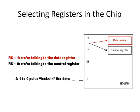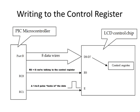When talking to this chip, you pull the RS pin high or low depending on which register you want, send a character or command to the eight data wires D0 through D7, and then pulse the E pin high and then low. After every time you talk to this chip, you have to delay about 100 milliseconds before talking to it again — it's kind of a slow chip.